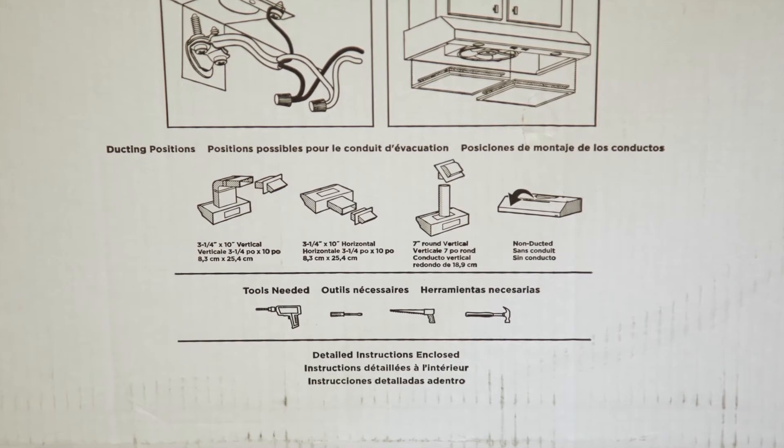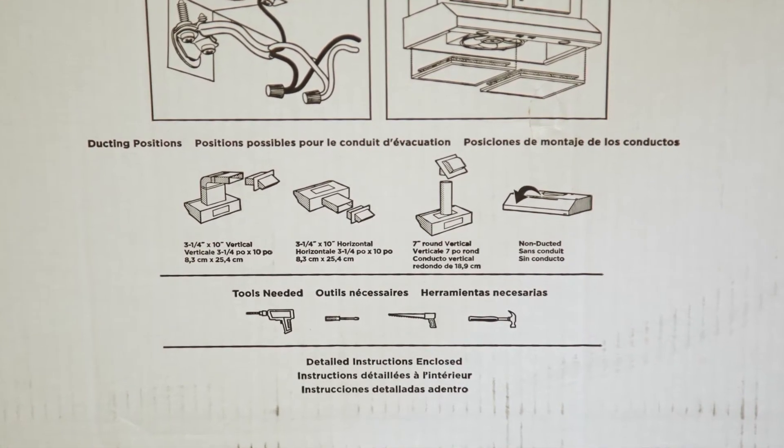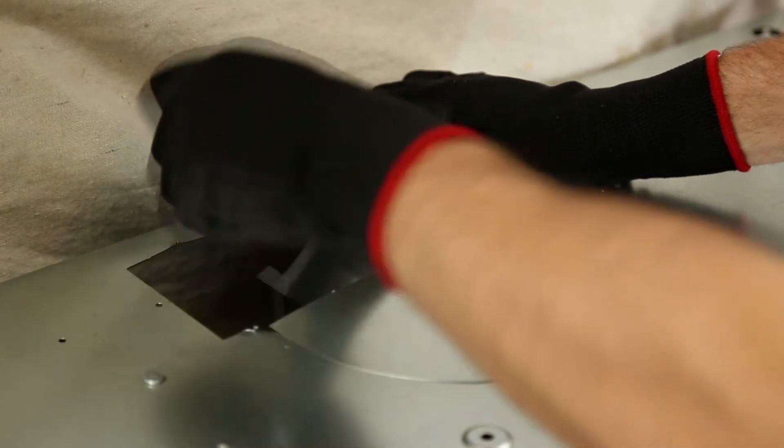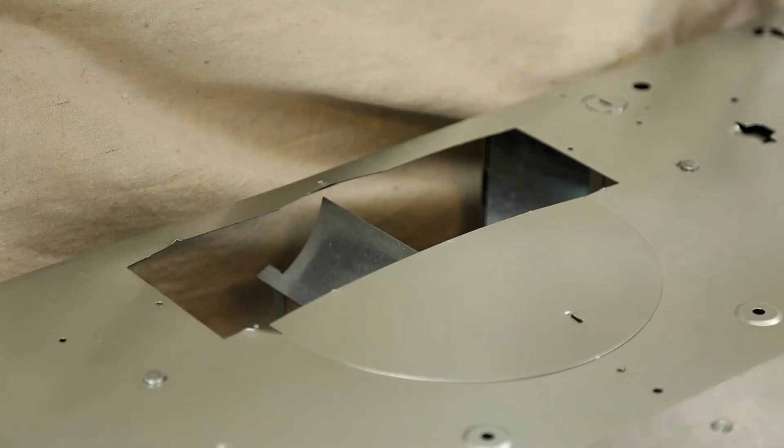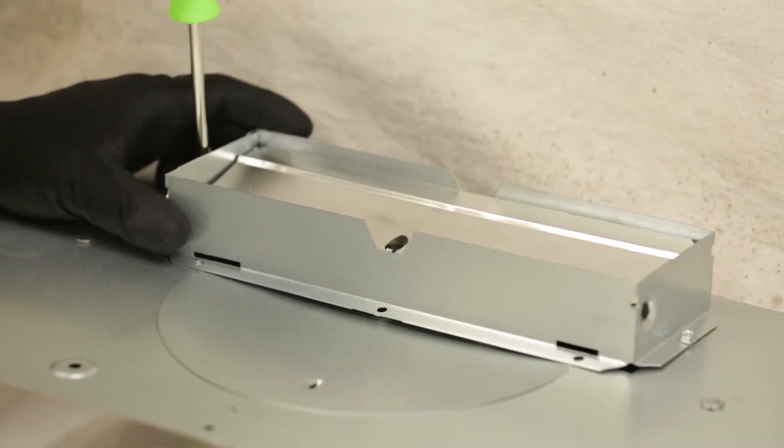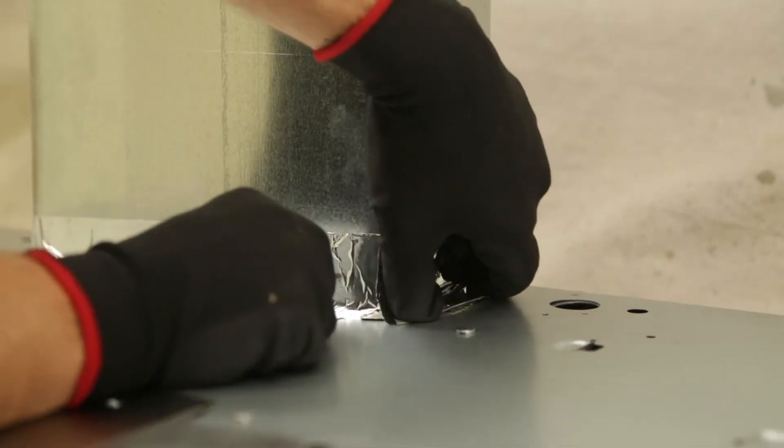There are four options for ducting your range hood: vertical, horizontal, round, and ductless. For vertical ducting using the included damper, remove the 3 1⁄4 inch knockout on top of the hood. Attach the damper to the hood, attach a small piece of ducting to the top of the damper, and seal the connection using metal foil duct tape.